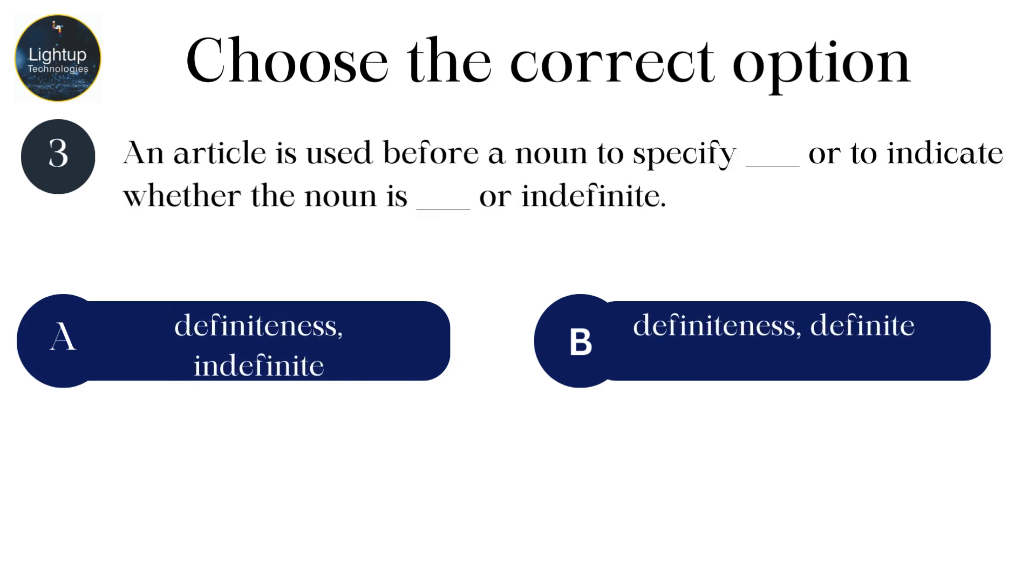An article is used before a noun to specify blank or to indicate whether the noun is blank or indefinite.